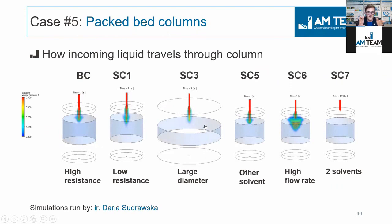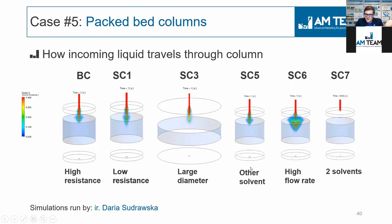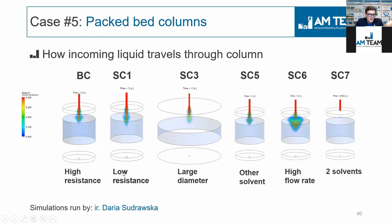These are just six from seven scenarios. You can see the big diameter in the middle, and the other ones have the same diameter. For example, it can be another solvent, or the flow rate can be changed. It can be two solvents, or it can be a low resistance or high resistance. Let's play everything first and then analyze.